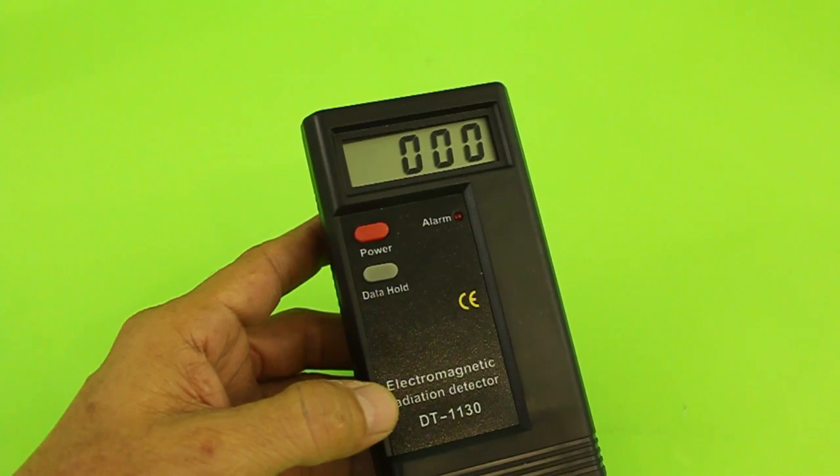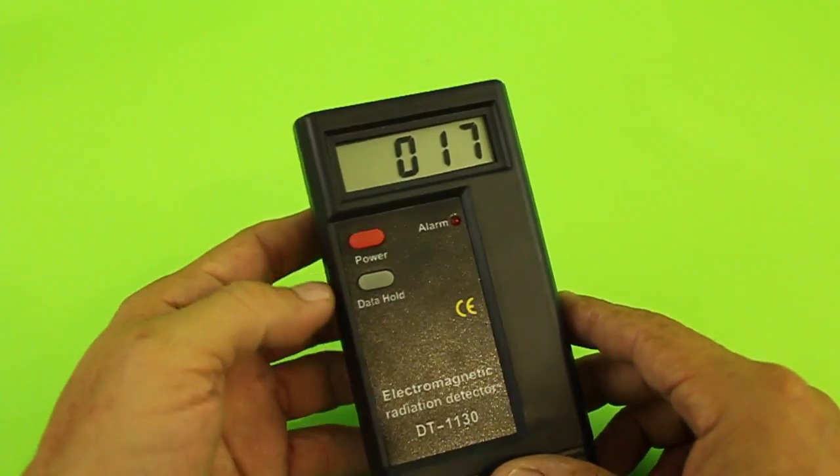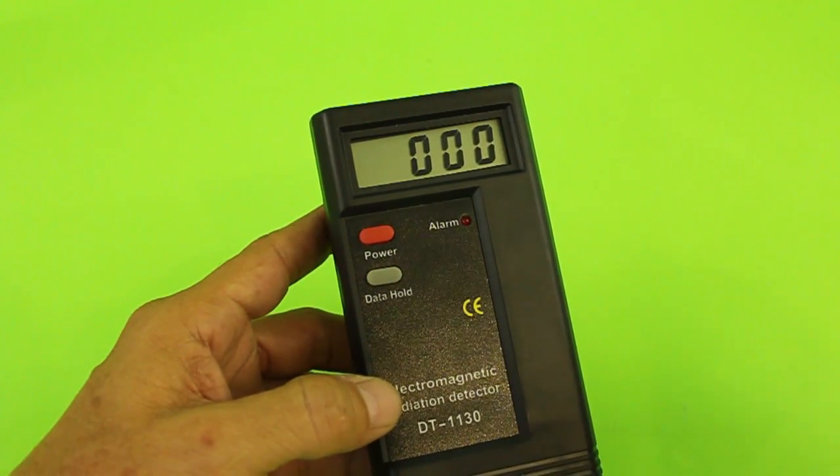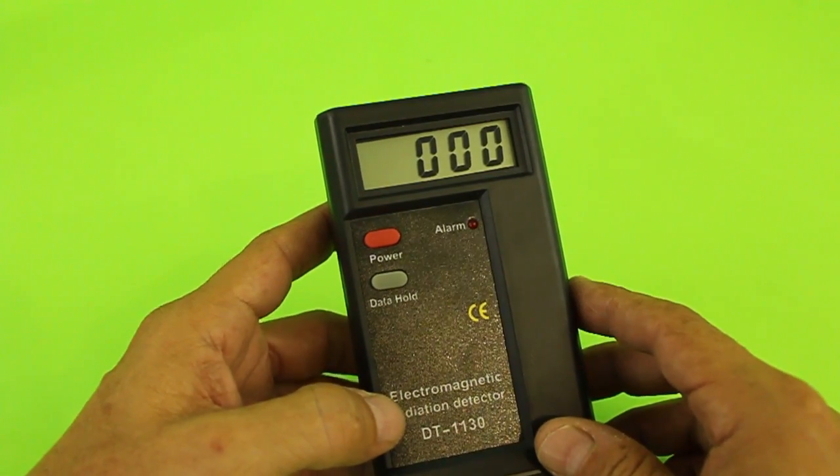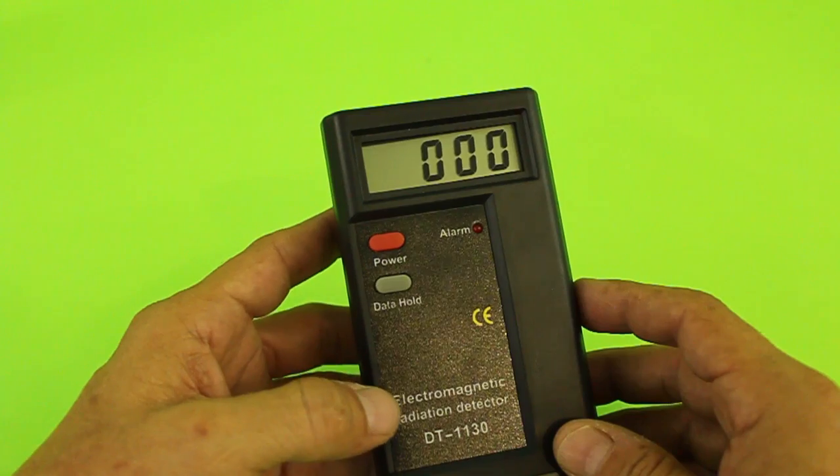It's very simple to use. Only has two buttons, on and off and the data hold button. For what I've seen, the readings go from 0 to 2000 units, which we don't know what kind of units they are. The manual doesn't say.